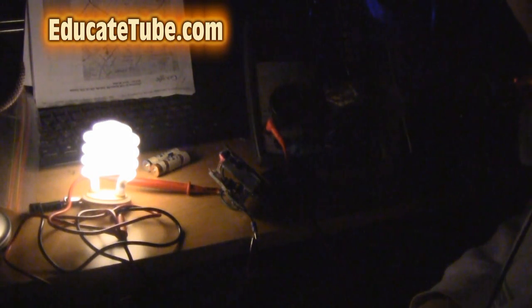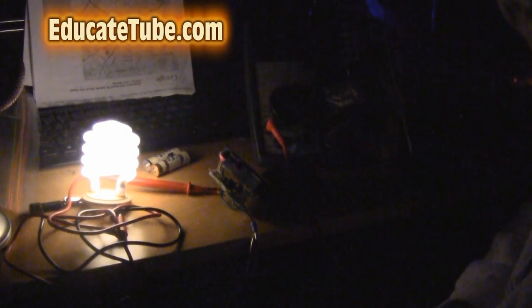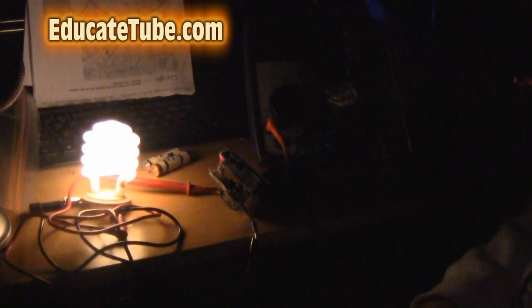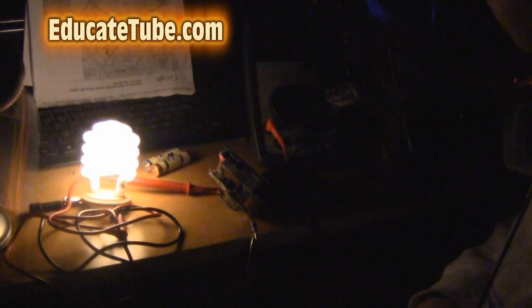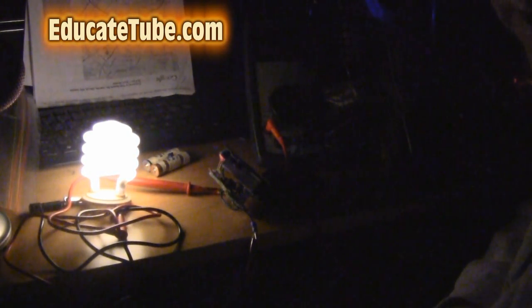Thanks for watching. Please subscribe to EducateTube channel. As you can see here, this light bulb with AA batteries lasts for at least two hours before it dims out. In fact, it actually lasts three hours before it becomes like a night light. So, for AA batteries, that's pretty impressive for three hours. Thanks for watching. EducateTube.com